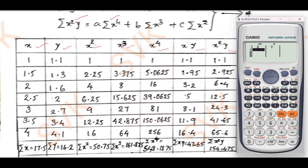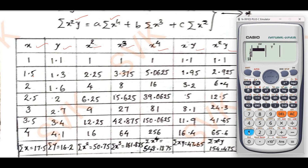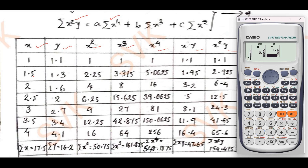After clearing the memory, enter the x and y values. Enter x values: 1, 1.5, 2, 2.5, 3.5, 4 — pressing Enter after each. Then use the joystick to go to the y column and enter y values: 1.1, 1.3, 1.6, 2, 2.7, 3.4, 4.4, 4.1 — pressing Enter after each.